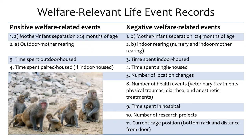Life events chosen for the study were pre-established as good or bad for welfare using a validation criterion from the literature: how events affect welfare in humans, whether they are preferred or non-preferred by non-human primates, and whether they would promote or reduce fitness in the wild. Positive life events included delayed mother-infant separation, being outdoor-reared with a mother, spending time outdoors, and being paired-housed if indoors. Negative life events included early mother-infant separation, being reared indoors, and experiencing location changes, illnesses, and injuries. Current social status was calculated as a proportion of observations spent single.